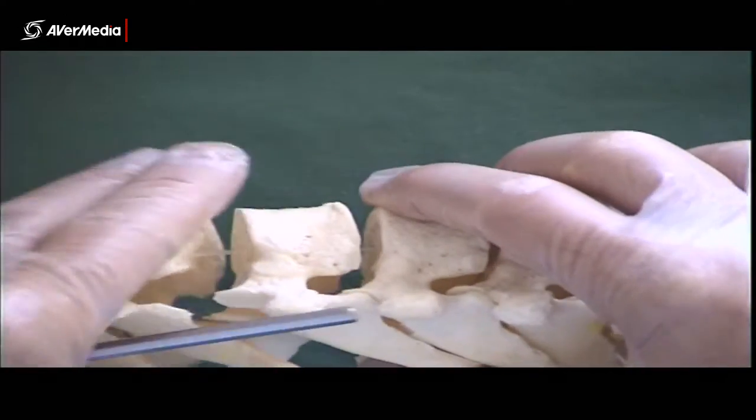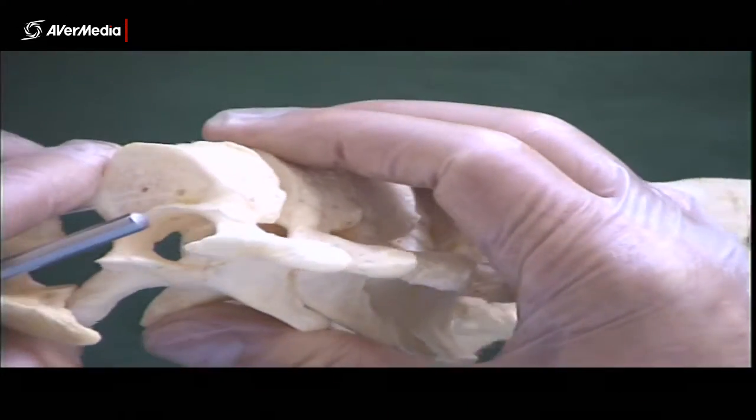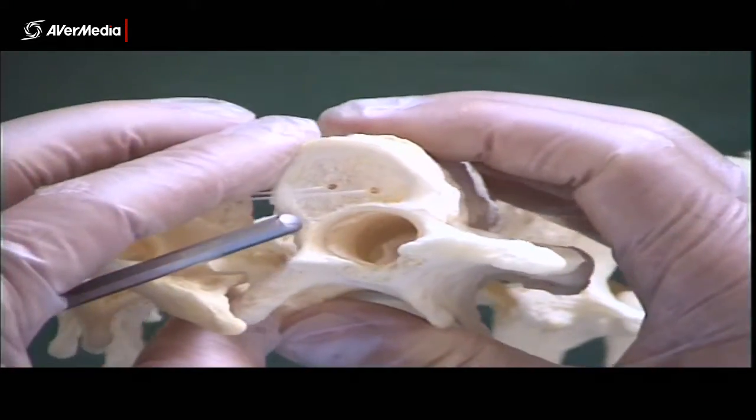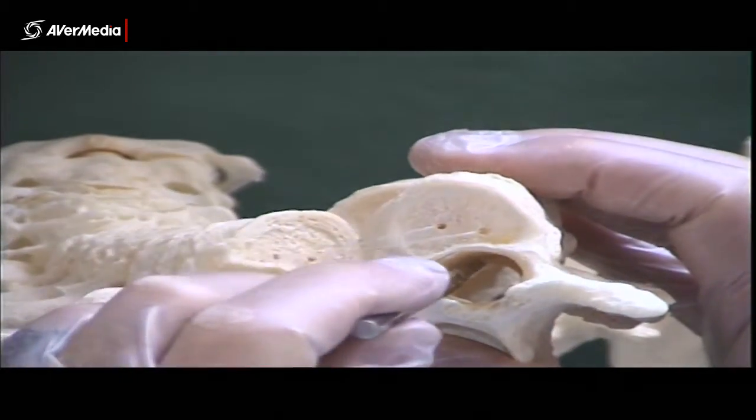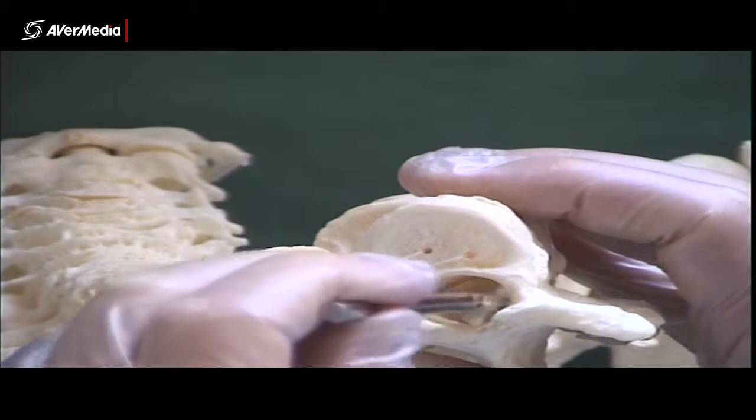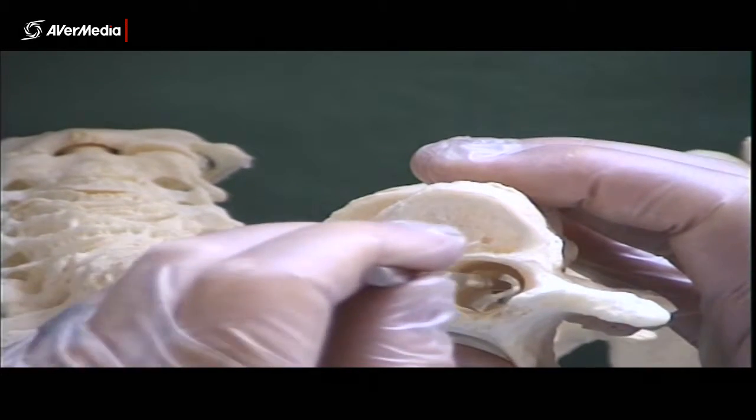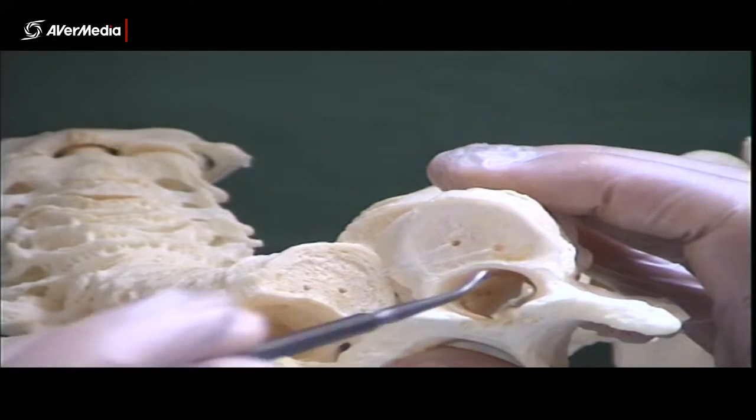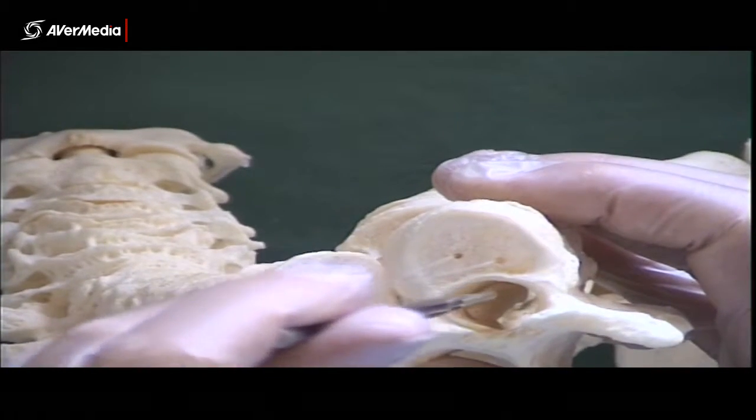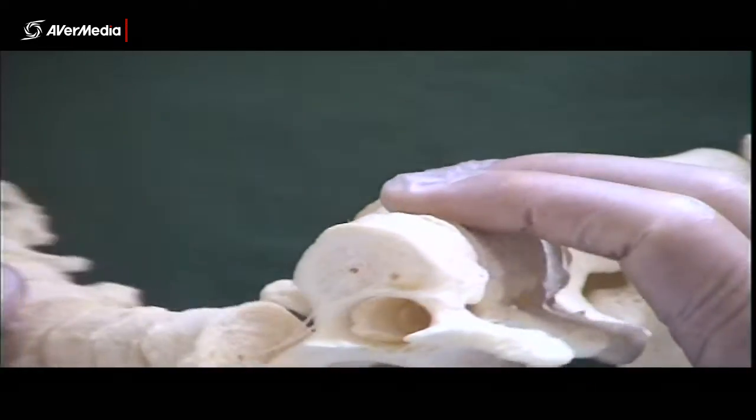And again, if we have two or more vertebrae articulating with each other, this structure here is now the vertebral canal. So that structure there has a different name if there's just one single vertebra on its own, but if there's two or more, that hole there, that tunnel, is the vertebral canal.